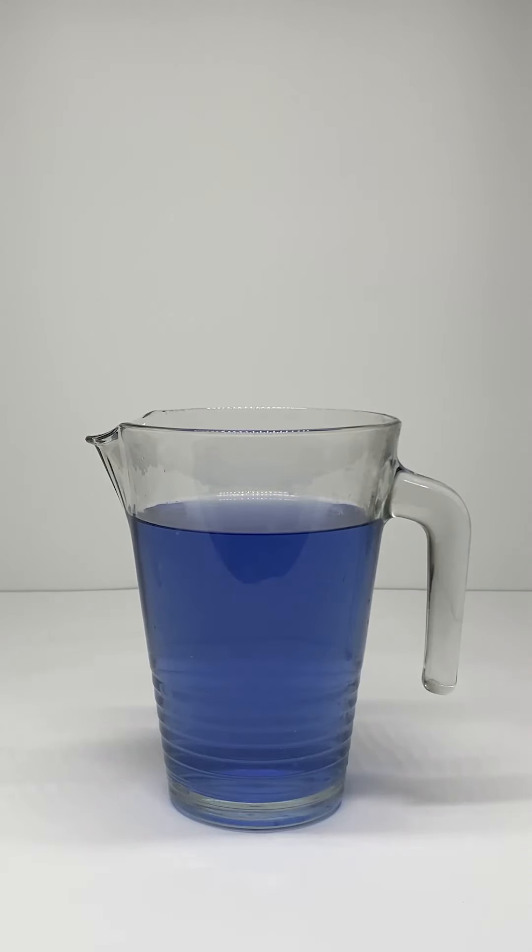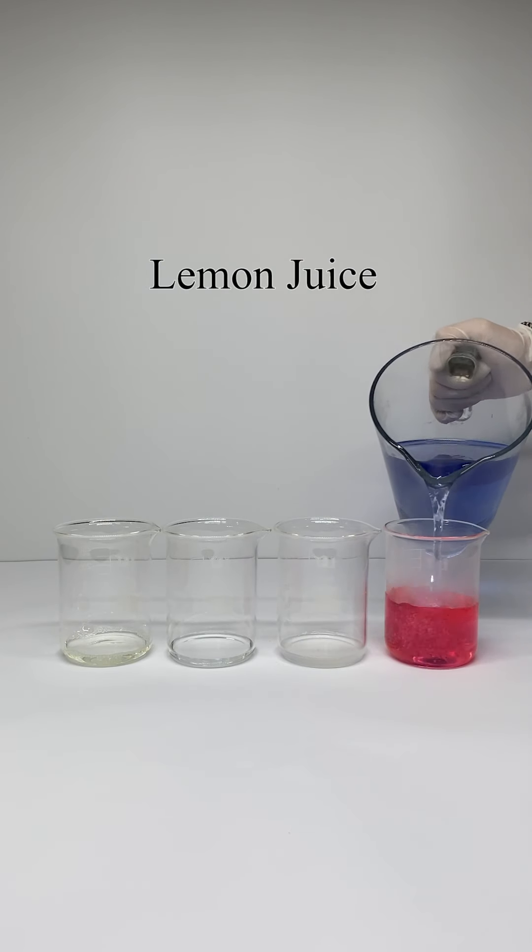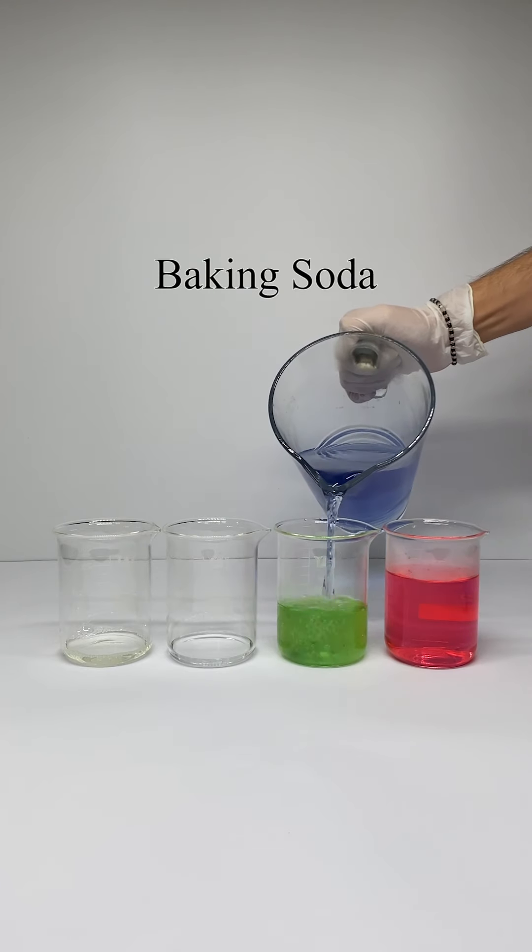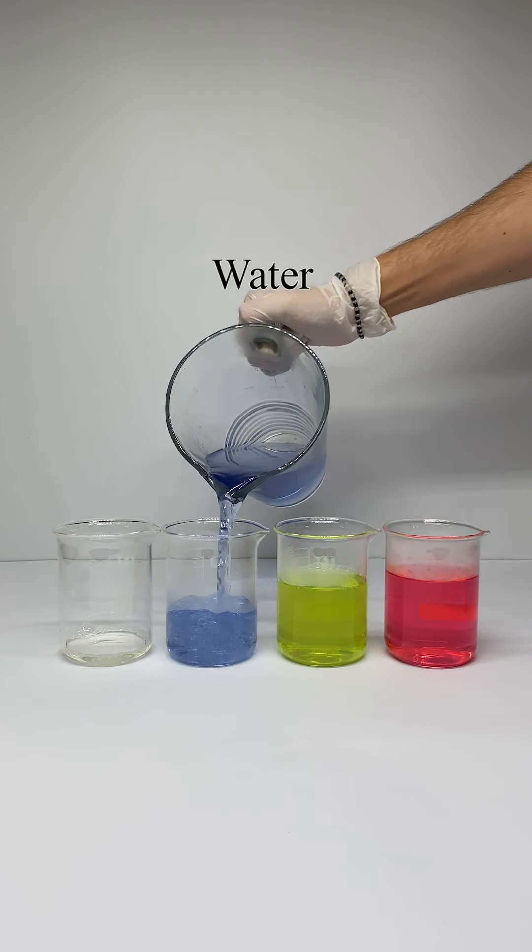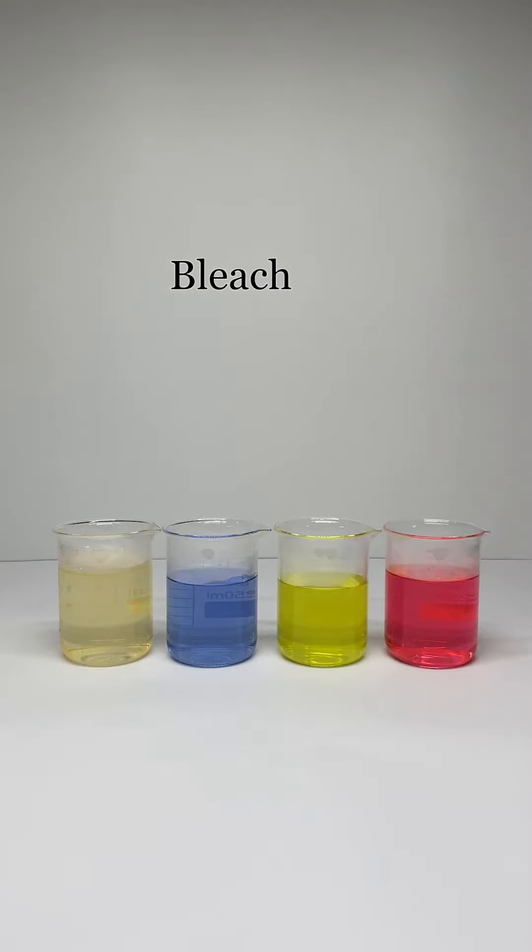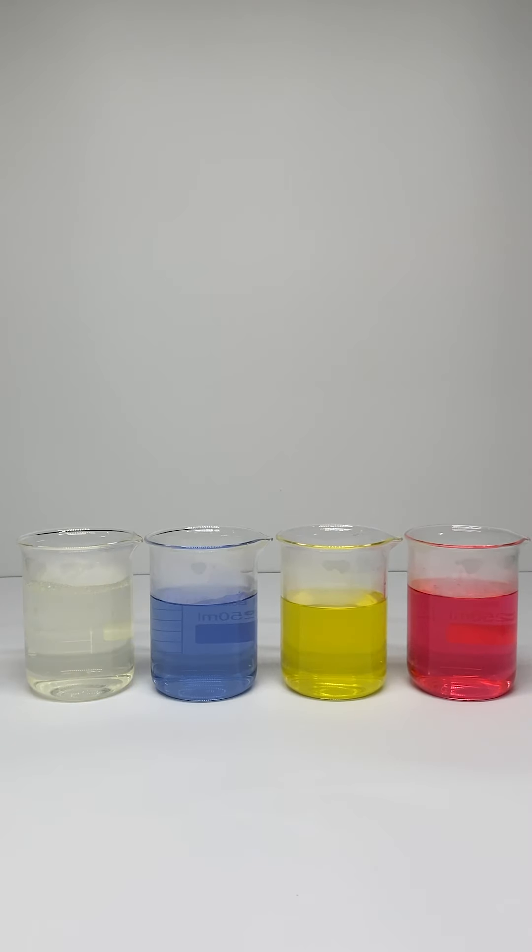When the pH is lower than 7 its color is pink. When it's higher than 7 it's green or yellow. When it's 7 it's blue. And when you put it in bleach it loses its color and becomes transparent.